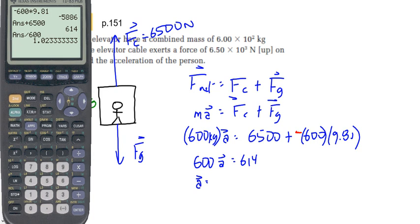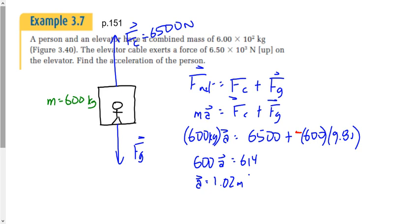1.02 meters per second squared. It's a positive value, so which way is the acceleration, up or down? Up, yeah, and that makes sense, right? Look, your force of gravity was 5,886. Your force of the cable is 6,500. The force up is bigger. It's going to accelerate upward. We know now that we really should have drawn gravity a little bit smaller, but you don't need to redraw it. We didn't know at the beginning of the question how big it should be, so I wouldn't zing your marks on that one.